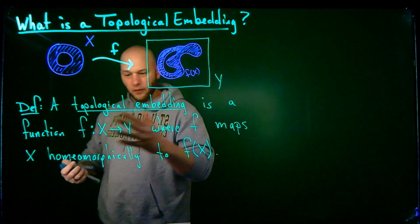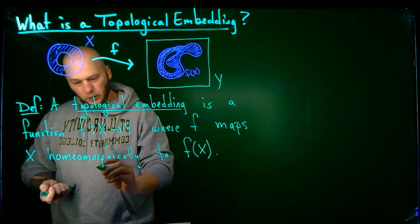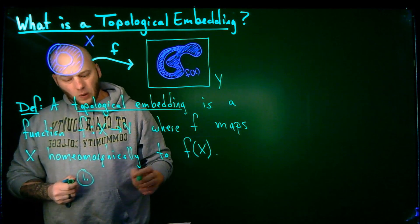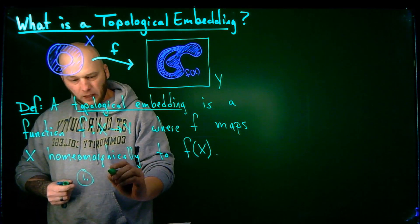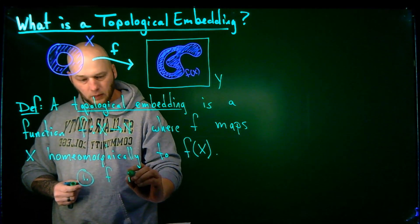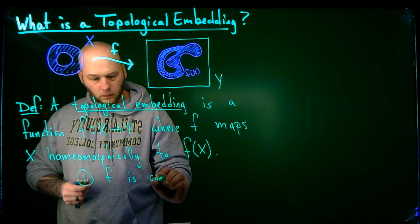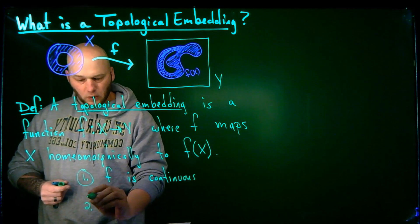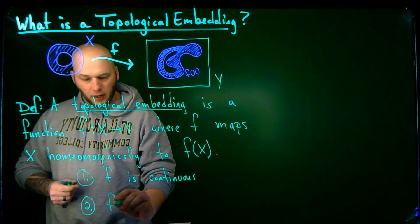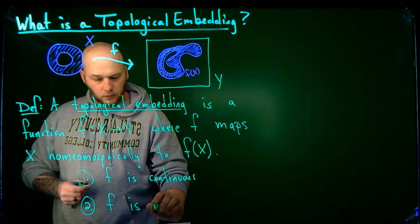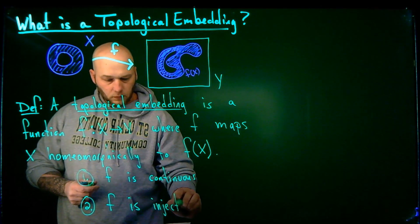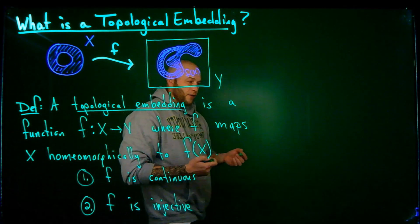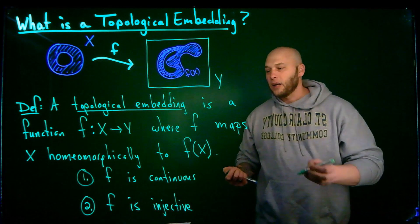Now, what I can do is I can actually kind of write this out in some more specific properties that a topological embedding has. So I can say that F has to be continuous, and F is injective.